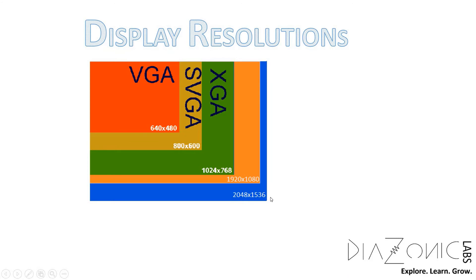The aspect ratio of the most common display resolutions supported by VGA is 4:3. If we divide the horizontal number by the vertical number — be it VGA, SVGA, or XGA — the result is 1.33, meaning 4 times the horizontal side to 3 times the vertical side. For example, 800 divided by 600 gives you 4:3 in fractional form. That's the aspect ratio.